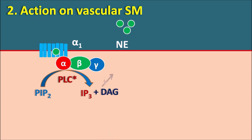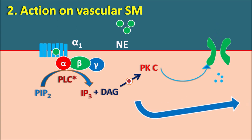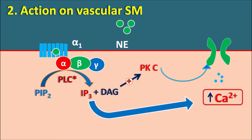Diacylglycerol stimulates protein kinase C, which opens inward calcium channels, allowing calcium to enter the vascular smooth muscle. IP3 also increases the release of calcium from internal stores. In this way, intracellular calcium levels are increased within the vascular smooth muscle, producing contraction of the vascular smooth muscle — and thus norepinephrine produces vasoconstriction through alpha-1 receptors.